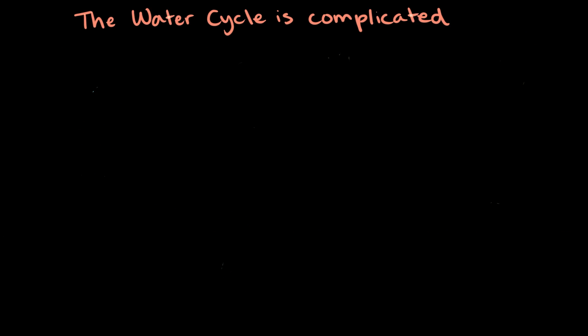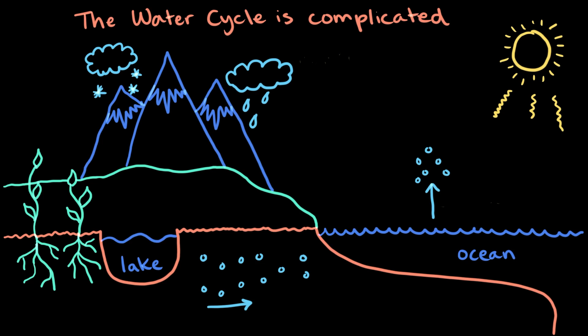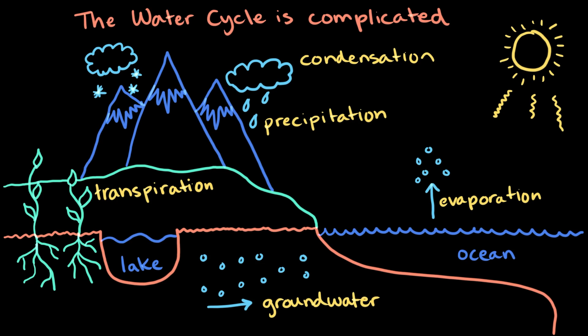There are many different paths for water, and the water cycle can be very complicated. But, it really comes down to something very simple.